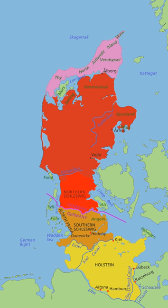Geographically and historically, Jutland comprises the regions of South Jutland (historically also Sleswig), West Jutland, East Jutland including Jersland, and North Jutland including Himmerland, Vensissel, Hanherd and Thuy.